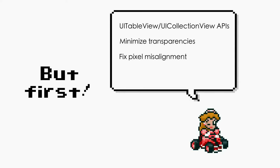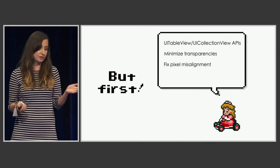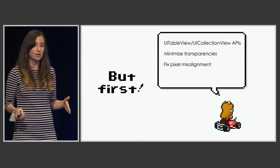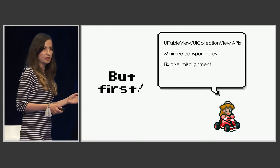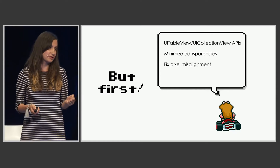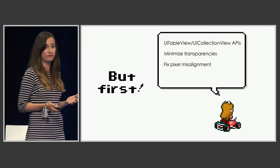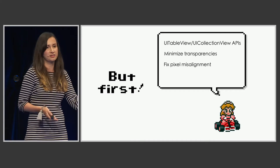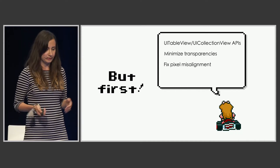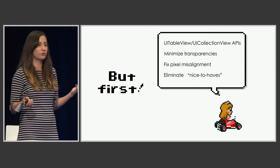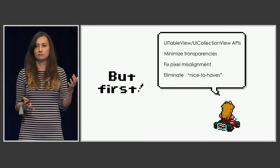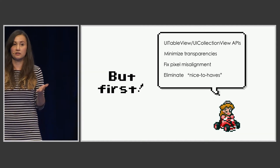You should also fix all pixel misalignment. Use the built-in tools in the simulator to identify this. Pixel misalignment happens when your frame starts or ends not on a full pixel. Instead of having a single color for that pixel, the colors from rejoining pixels are pulled in to compute the actual color, which is a very expensive operation. This usually happens if you try to center a view, divide by two, and get a fractional number — so always round down or up to avoid it. And of course, eliminate nice-to-haves: maybe you're working with a client who has wiggle room in their requirements and you can identify potential issues before starting to code.